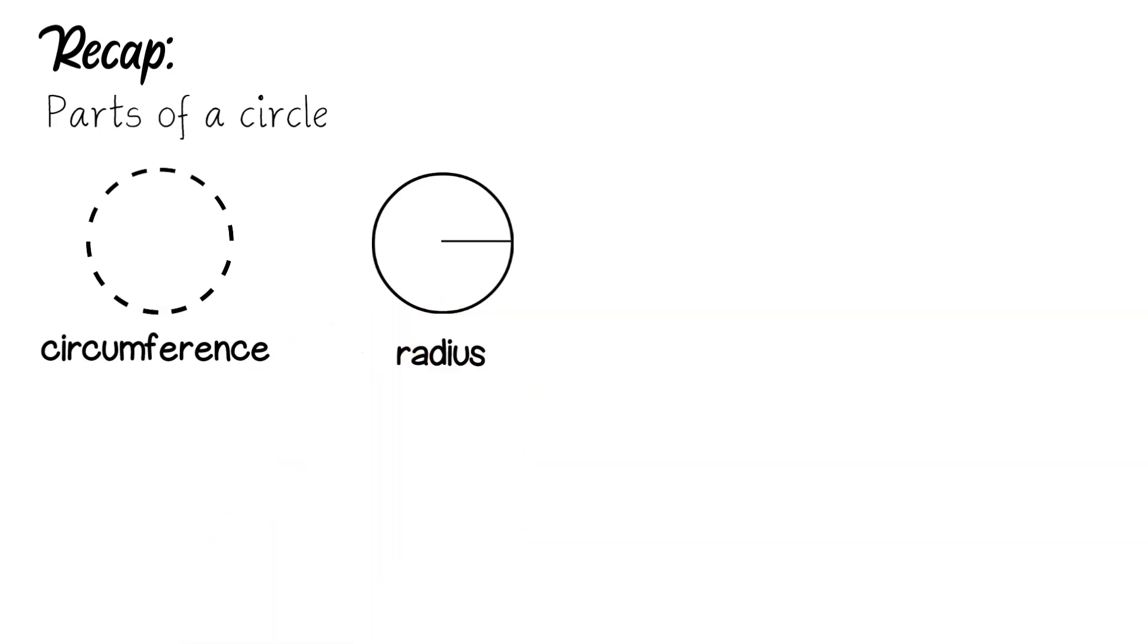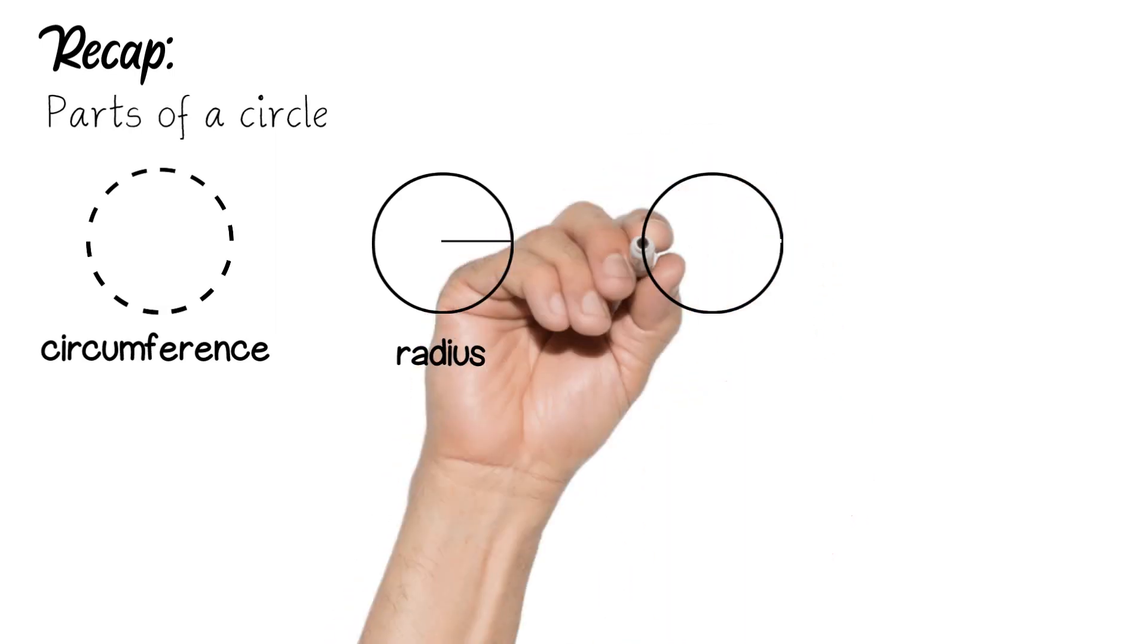Now if I continue that radius and continued it all the way to the other side as well I would have what's called diameter. This line has to be crossing through the centre.